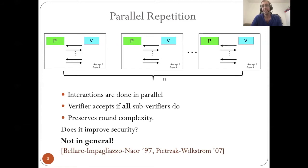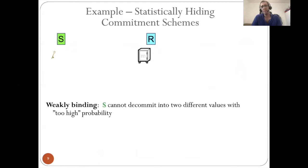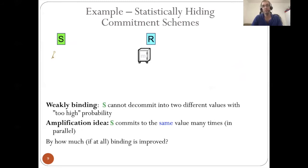This matters because, going back to the statistical hiding commitment example, suppose we have a very weak binding guarantee that S can decommit into two different values with probability 1 minus epsilon. The amplification would be that S commits to the same value many times in parallel, and hopefully decommitting on all these values will be much harder. But if we don't know exactly what happens inside the scheme, we cannot answer this question, because parallel repetition might not reduce the soundness of an arbitrary argument.